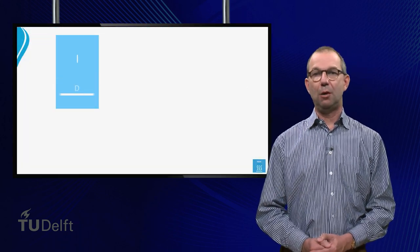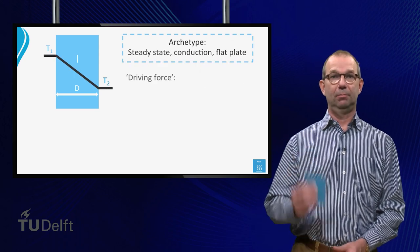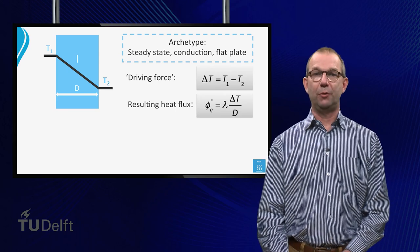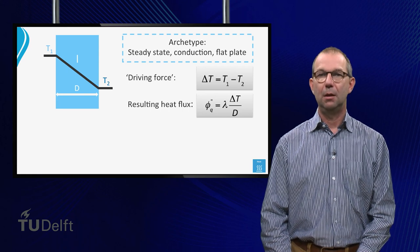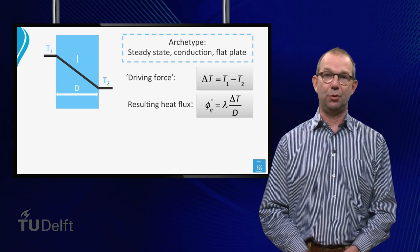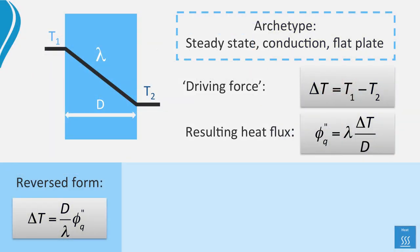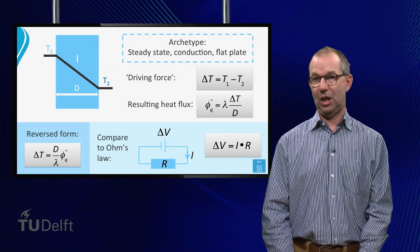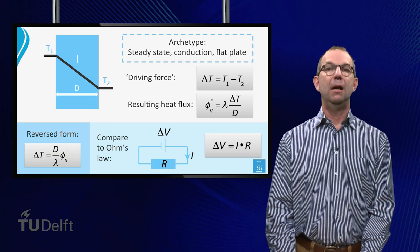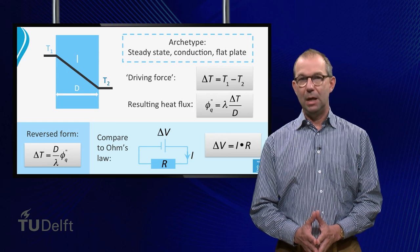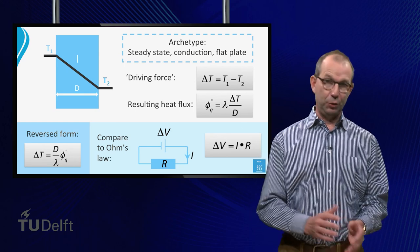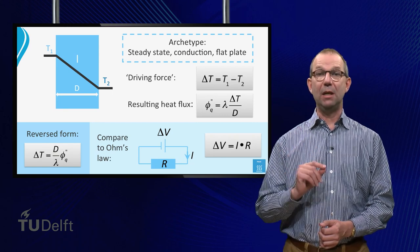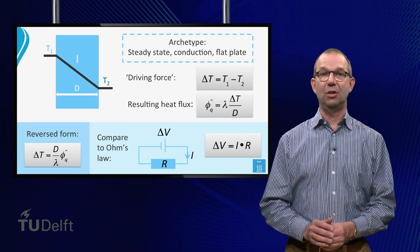In the previous lecture we learned how to describe steady state heat conduction through a flat plate. It is good to memorize this case as it serves as one of the archetypes of heat and mass transfer. We can make an interesting and useful analogy by writing the flux versus driving temperature difference in reversed form: delta T equals D over lambda times the heat flux. Compare this to Ohm's law: delta V equals I times R. Delta T plays the role of the voltage difference, while the heat flux is the current. We thus see that D over lambda is a resistance — but now to heat flow.